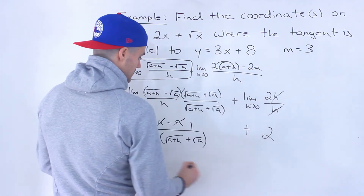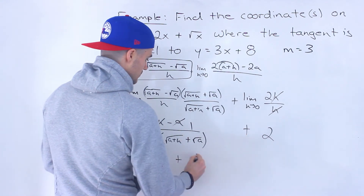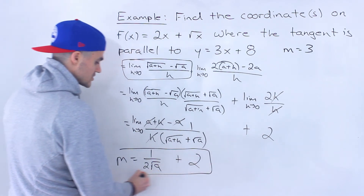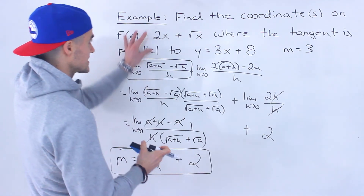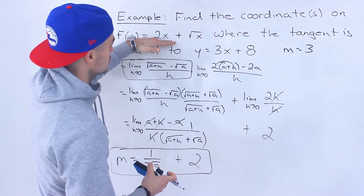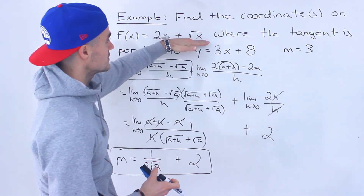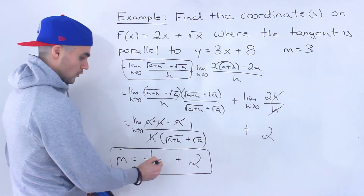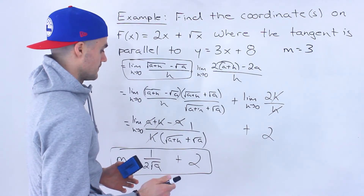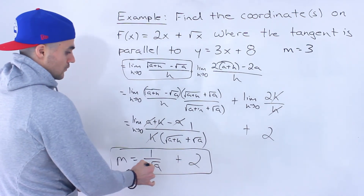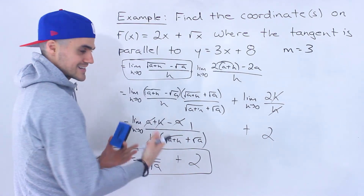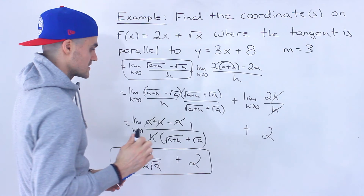So this limit ends up being 1 over 2 root a, and then combined with the other limit, the general expression for the slope of the tangent is 2 plus 1 over 2 root a. It's almost like we found the slope of the tangent for 2x, which is just 2, and for root x, which is 1 over 2 root a, and then combined them. This a value represents any x value on the function.